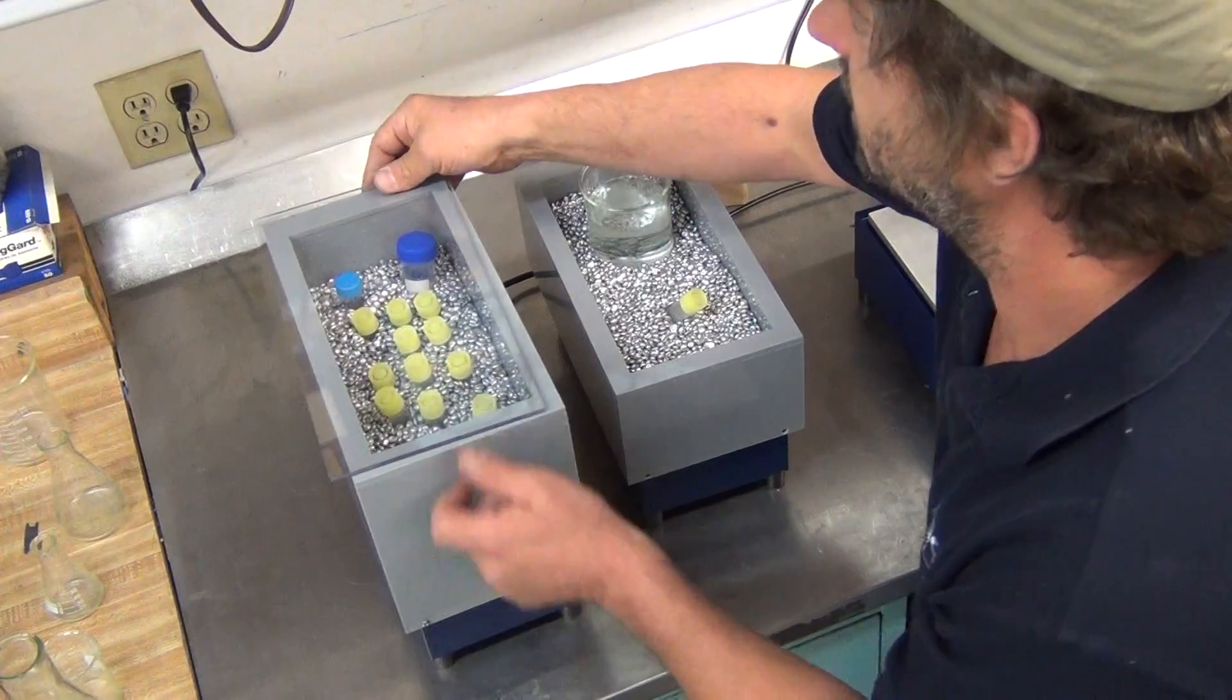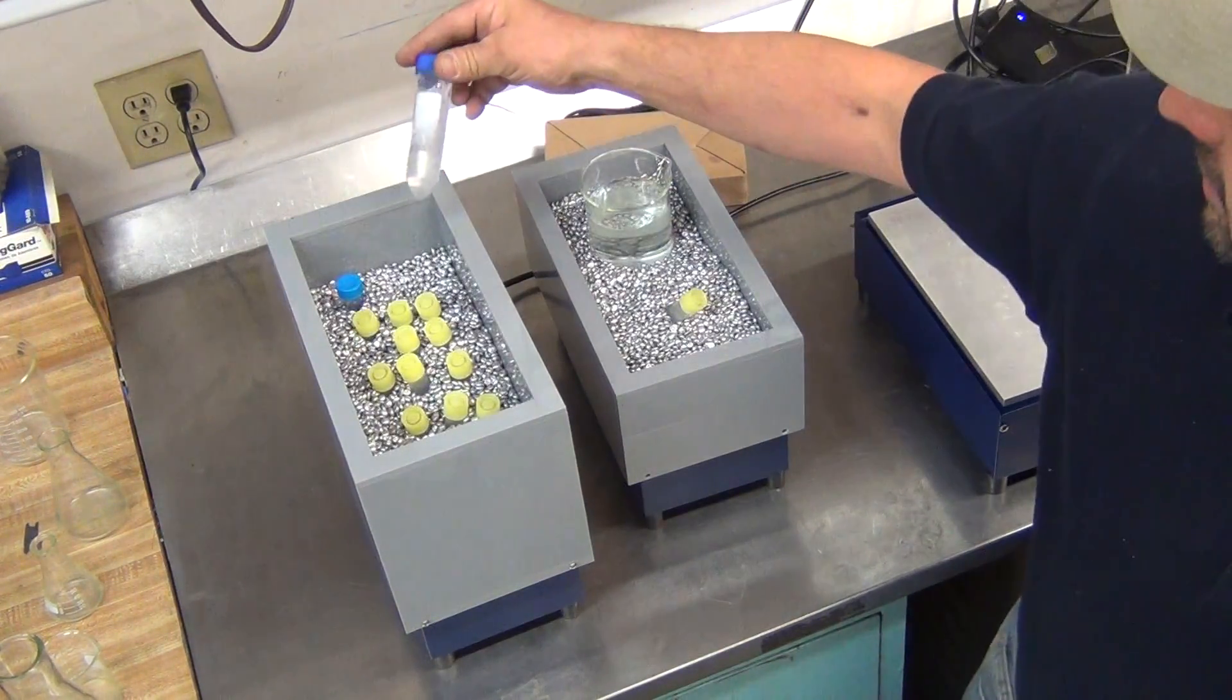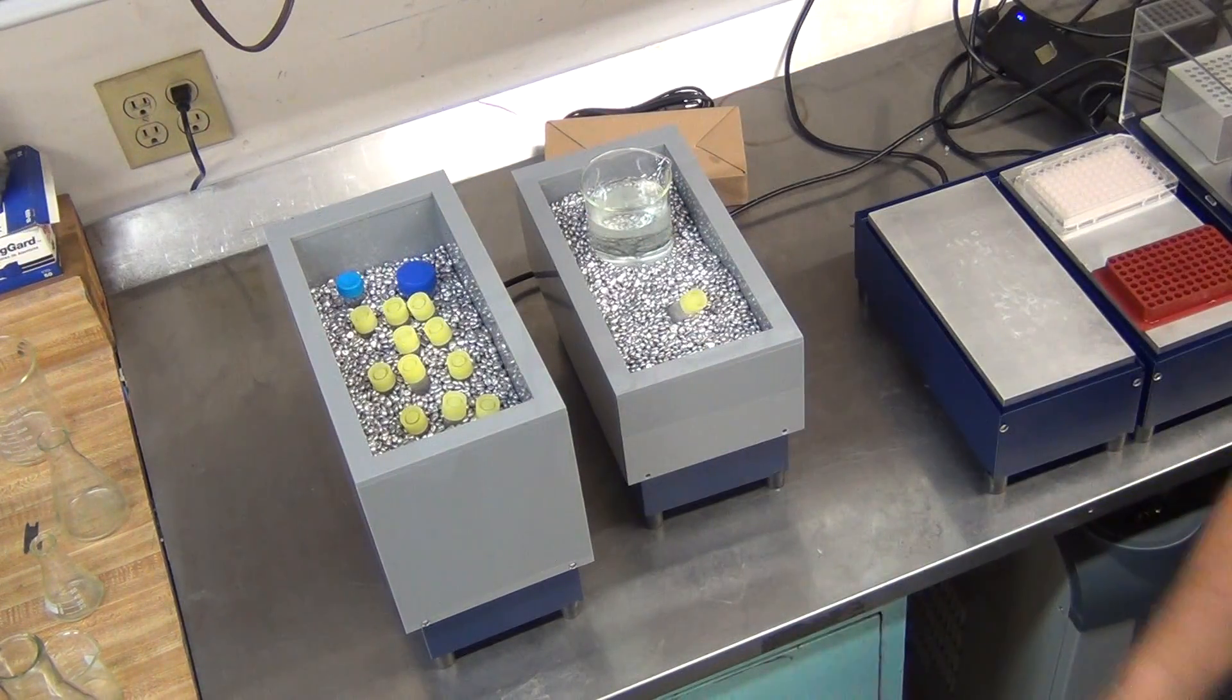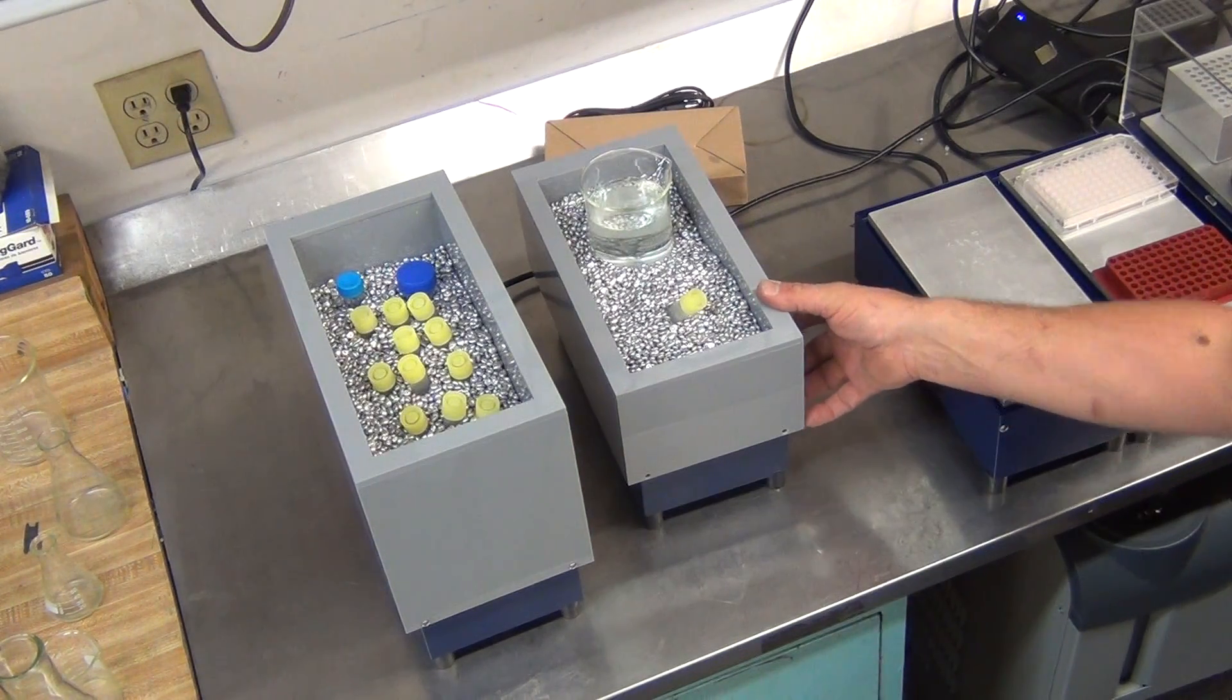Here you can see the 6 inch version where we have 15 milliliter and I think this is 50 milliliter vials being cooled right now. Now, this is a 4 liter capacity, this is a 2 liter capacity.